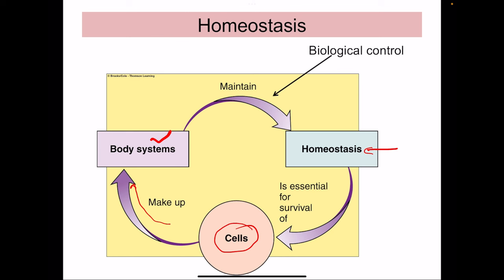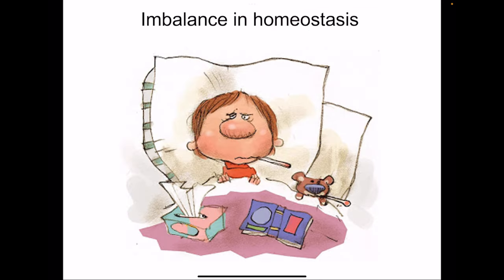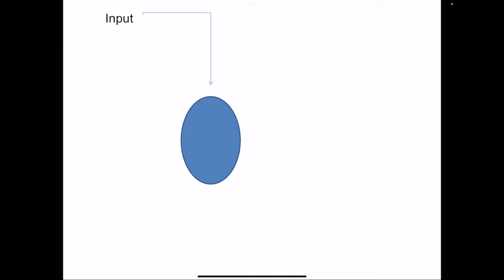All body systems act to maintain homeostasis — the relative constancy of the internal environment — which is essential for survival of the cells. The cells have teamed up to form systems for their own survival, and the maintenance of body systems for homeostasis involves control processes. Any imbalance in homeostasis will result in disease. For physiological processes of the cells to function properly, homeostasis has to be maintained.